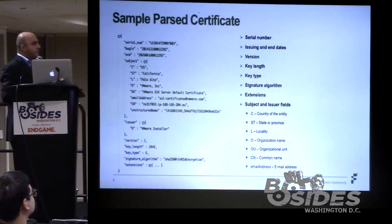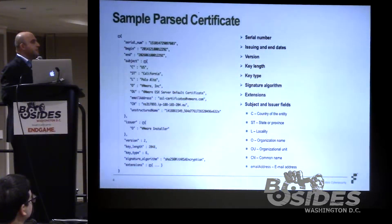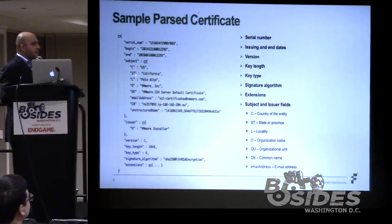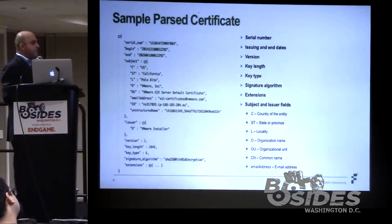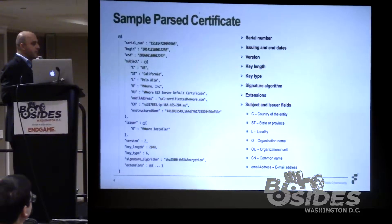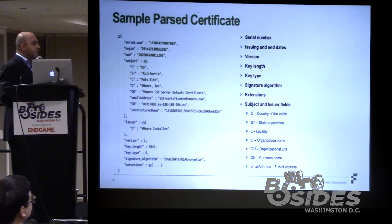Looking at one sample parsed cert, some of the fields include: serial number, begin date (the issuing date — in this case 2014), and end date (expiry — in this case 2026). Subject fields include country (US), state, locality, organization, organization name, email address, and common name. The issuer in this case has one field: organization. Other fields include key length, key type, and signature algorithm. So far, it doesn't look very bad — some names that don't look terrible.